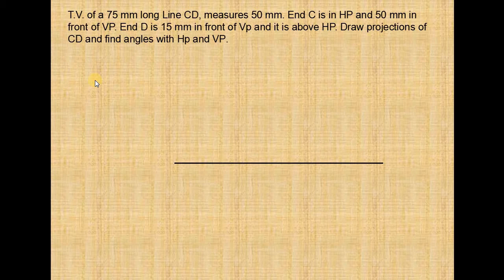First you draw the XY line of any length. Next you draw a vertical line. On this line we have to indicate the projections of C and we have to indicate the CD. C is in the HP, that means C comes on the XY line here.